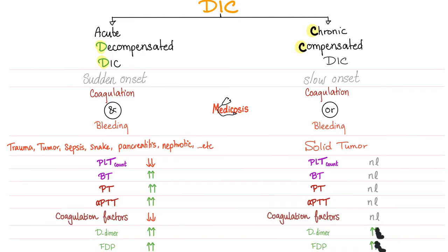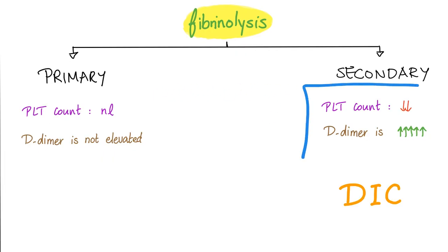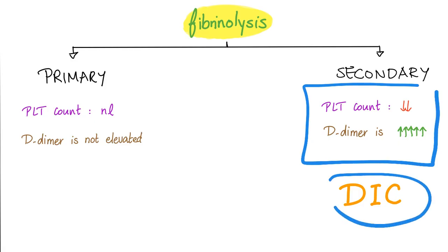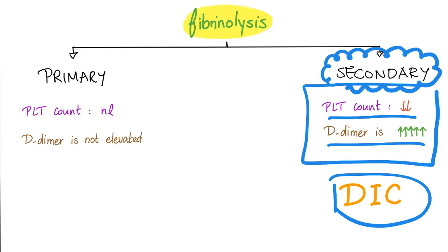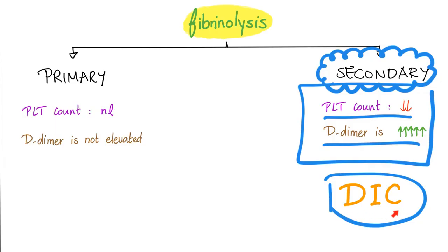We have two types of fibrinolysis: primary and secondary. In primary fibrinolysis, platelet count is normal and D-dimer is also normal. In secondary fibrinolysis, platelet count is low and D-dimer is very high. DIC fits into secondary fibrinolysis because platelet count is low and D-dimer is elevated. Also, remember that DIC is always secondary to something else — you need to find the underlying cause, otherwise DIC is not going away.